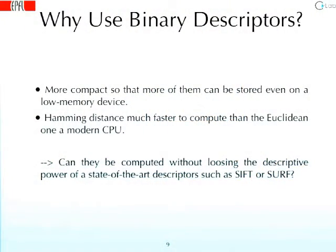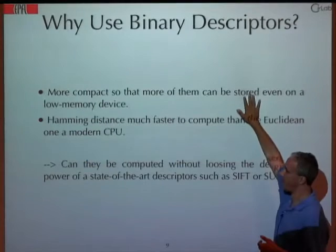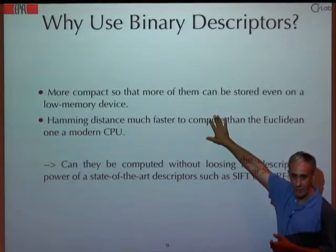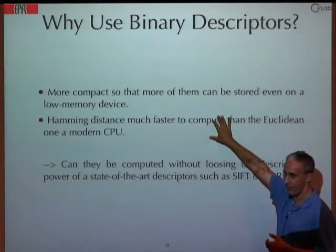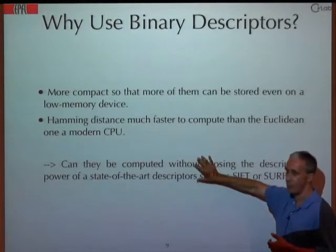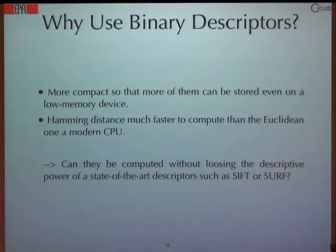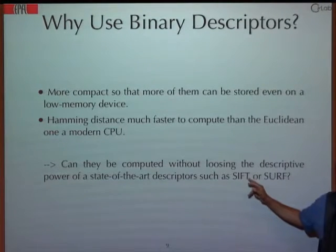What I'm going to argue is that if you replace floating point descriptors with binary descriptors, you gain in memory size, you gain in speed, and you don't really lose in accuracy. So they are a good thing. The program is to show that binary descriptors are much more compact, they lead to faster matching because the Hamming distance is faster to compute than the Euclidean distance, and if you compute them correctly, you don't really lose compared to more traditional ones like SIFT or SURF.